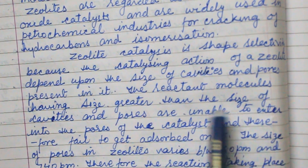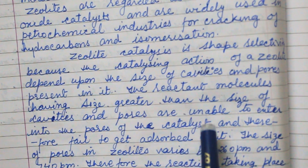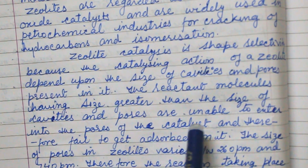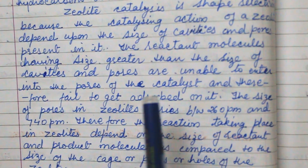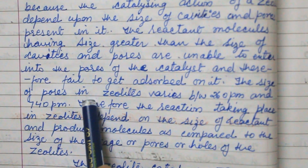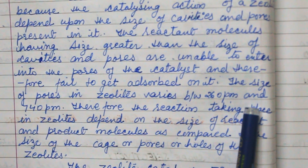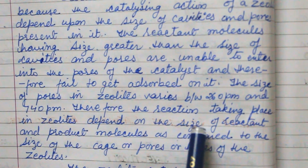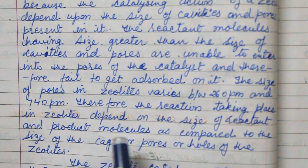Reactant molecules having a size greater than the size of the cavity and pores are unable to enter into the pores of the catalyst, and therefore fail to get adsorbed on it. The size of pores in zeolite varies between 260 pm (picometers) and 740 pm.